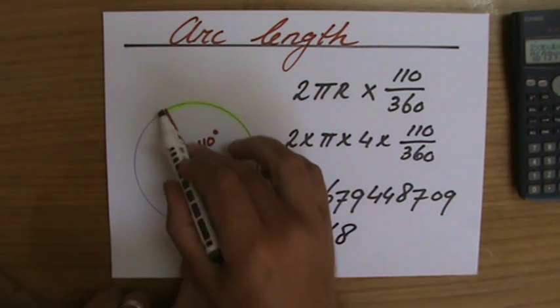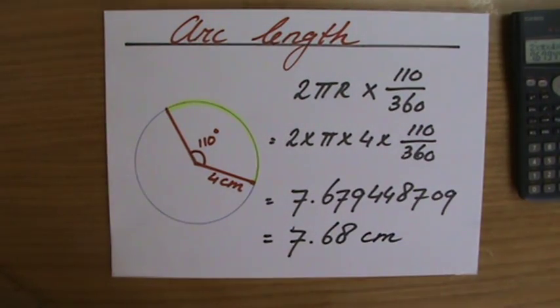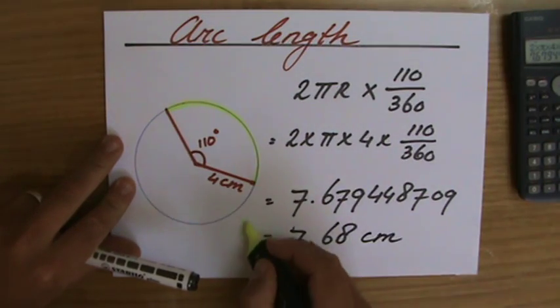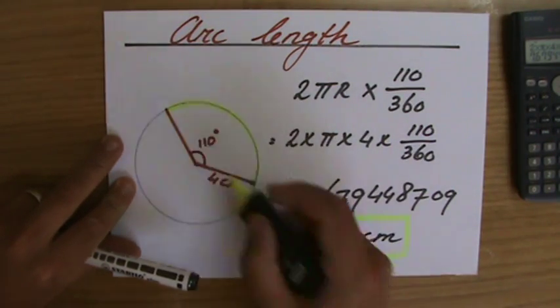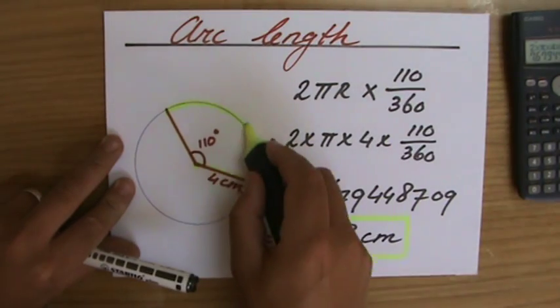We're talking about a length, so the unit is a centimeter. So the arc length, the minor arc, which is enclosed by the two radii, this one and that one, is 7.68 centimeters.